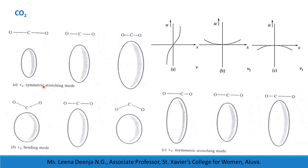First, consider the symmetric stretching mode. During compression and stretching, there is a change in size of the polarizability ellipsoid. If we plot alpha versus the normal coordinate x (the displacement), we get a graph showing that d(alpha)/dx near the equilibrium is non-zero. So this mode is Raman Active.